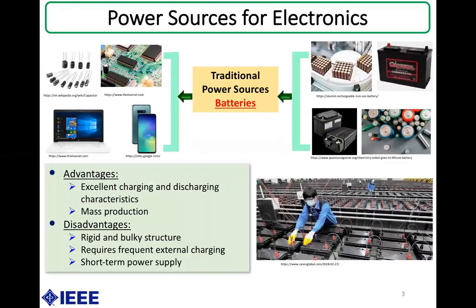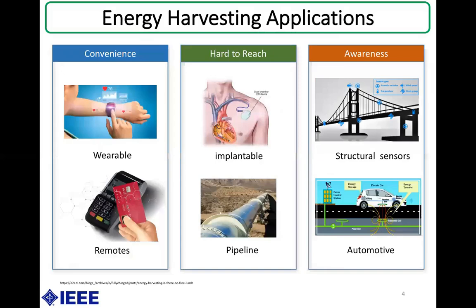All electronics run on electric power. The most commonly used power source for portable electric devices are batteries. These commercial batteries have excellent charging and discharging characteristics and are a sustainable power source for powering electronics. However, these commercial batteries are rigid, bulky, and require external charging. These limitations open opportunities for the study of energy harvesting with flexible materials.